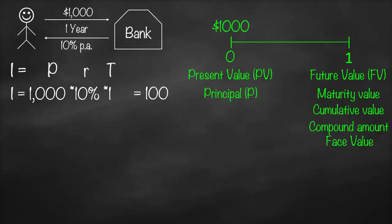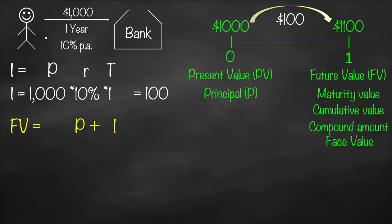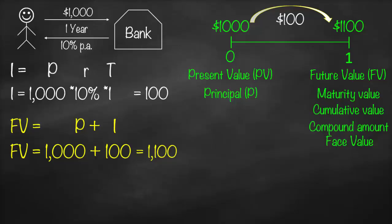Mark will deposit a thousand dollars today at time zero and will receive an interest amount of a hundred dollars after one year. Therefore, the total amount — the future value at year one — will be a thousand dollars plus a hundred dollars, equal to one thousand one hundred dollars. So we can say that our future value formula is equivalent to principal plus interest amount: FV equals a thousand dollars plus a hundred dollars, giving us eleven hundred dollars. This is the first formula for future value.